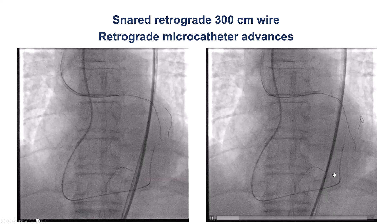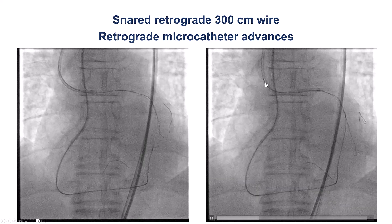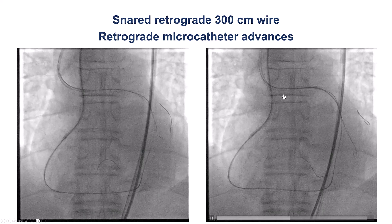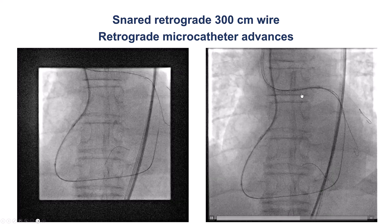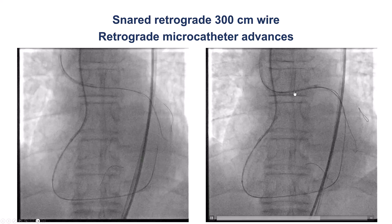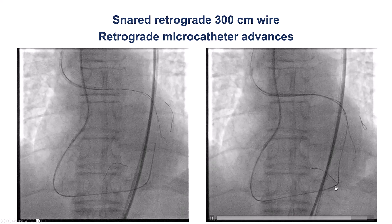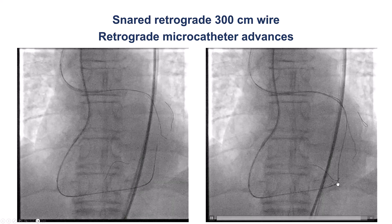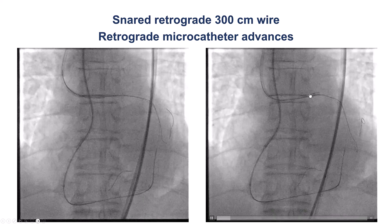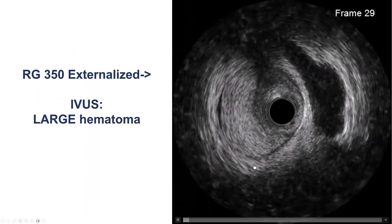We still could not get the microcatheter to advance, so we put a snare inside the guide catheter and snared the Caravel wire. After doing that, we got better support and were able to advance the retrograde microcatheter all the way into the antegrade guide catheter.